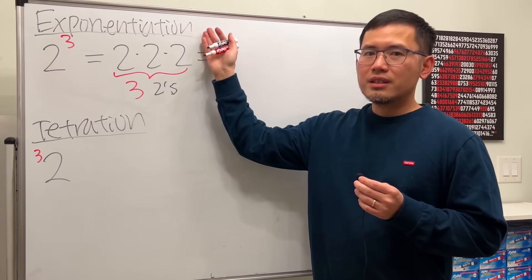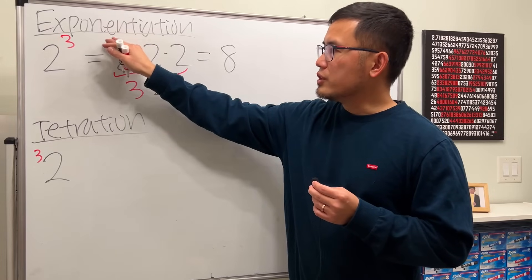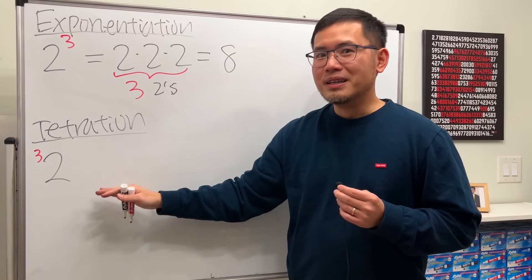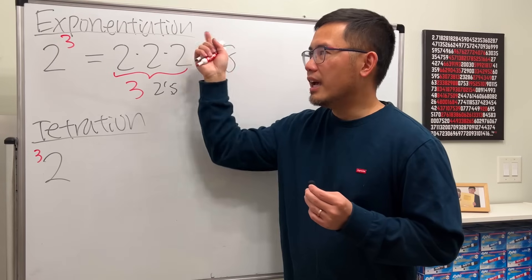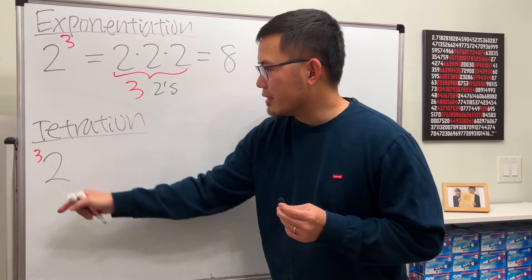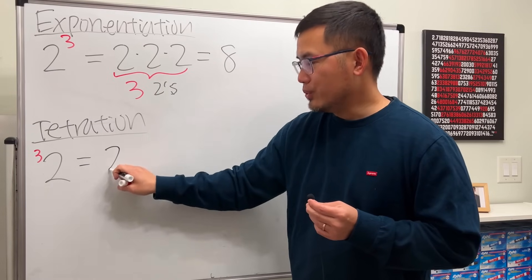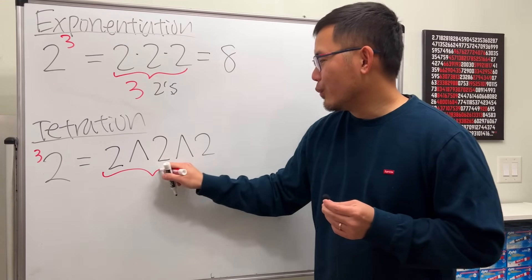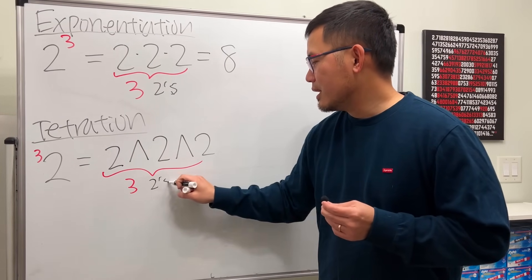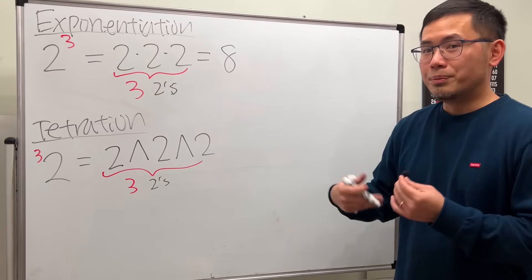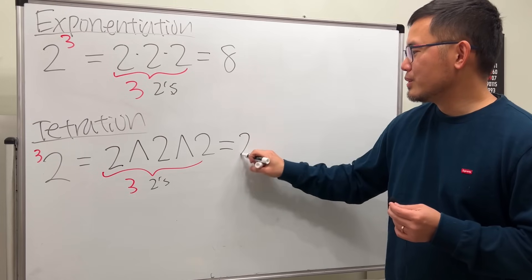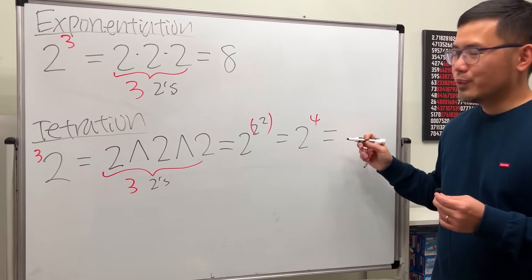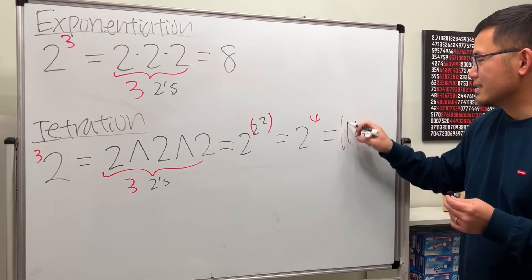Tetration is the next level of exponentiation. Exponentiation is repeated multiplication; tetration is repeated exponentiation. With a 3, we write 2 and then power 2 and then power 2 — three twos — but as a repeated exponentiation: 2 to the 2 to the 2. We do the rightmost first: 2 to the 2 is 4, then 2 to the 4 is 16. So 2 tetrated to 3 equals 16.